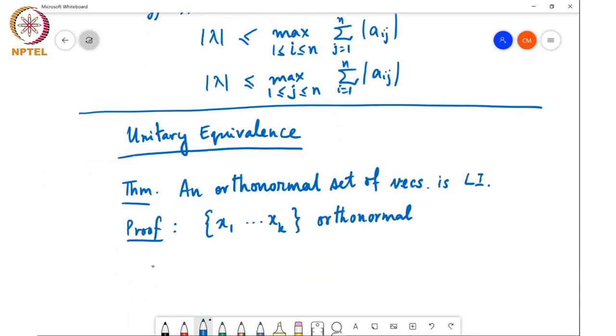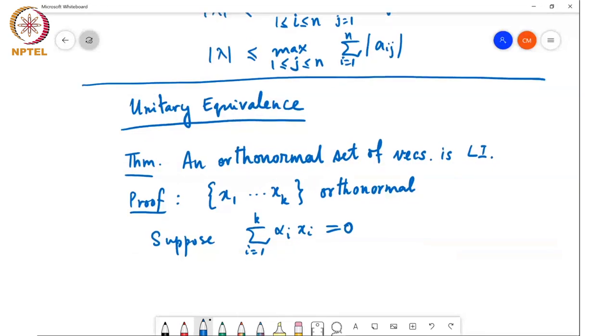now we need to show that they are linearly independent. And so suppose sigma i from 1 to K, alpha_i Xi equals 0, then we need to show that all these alpha_i's must be equal to 0. So if this is the 0 vector, then we know that this implies sigma i from 1 to K, alpha_i Xi Hermitian times sigma i from 1 to K, alpha_i Xi is equal to 0.